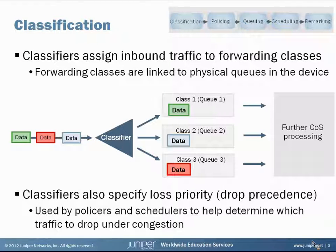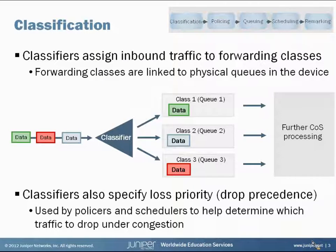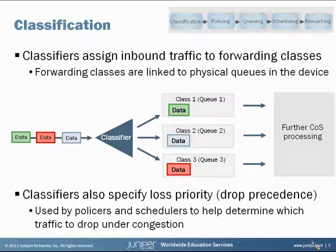Classifiers also have an additional layer of traffic separation called loss priority — or drop precedence. They're used later in the process by policers and schedulers as another layer to mark traffic within a given forwarding class, marking it for a higher or lower level of drop priority. This helps you give more granular control when making decisions about dropping traffic under congestion.